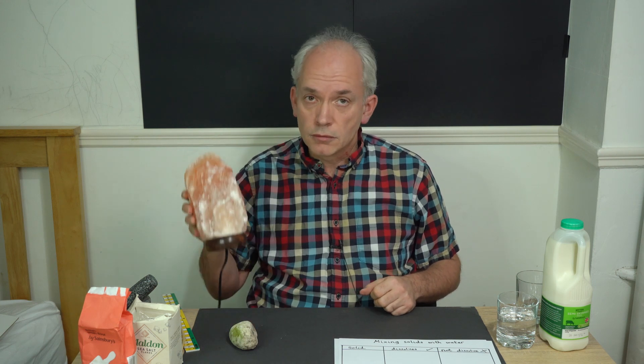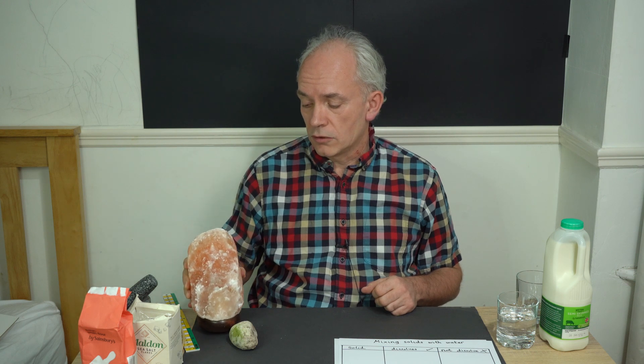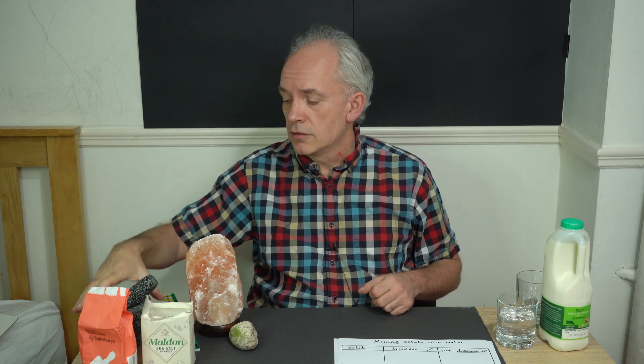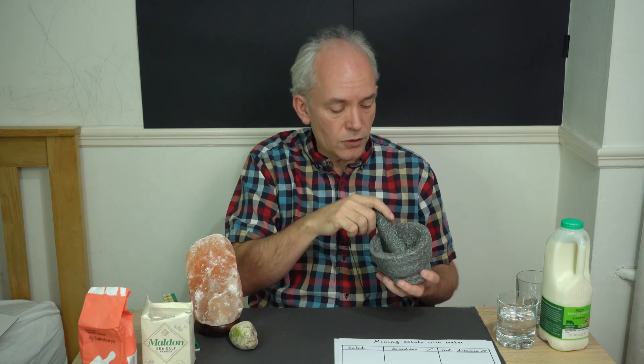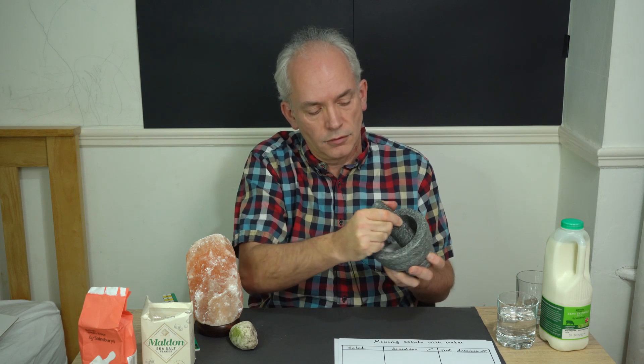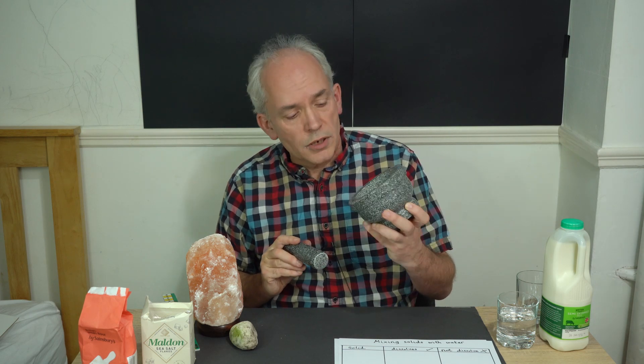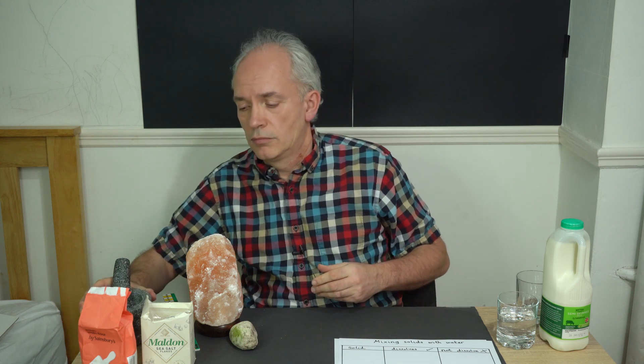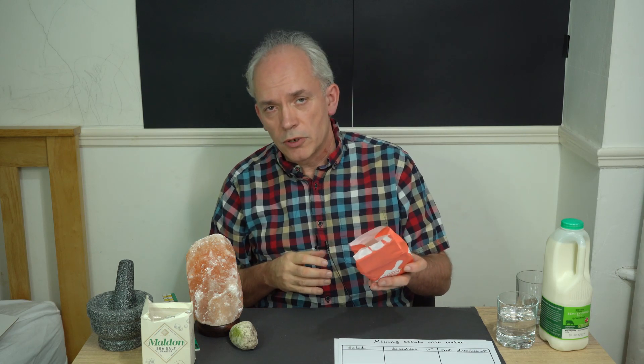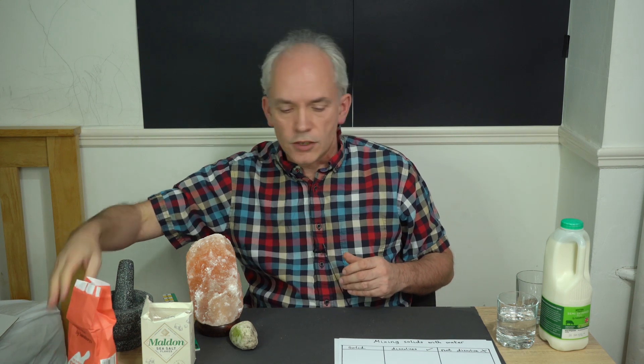Now this, do you know what this is? This is salt. This salt comes from the ground, they turned it into a lamp. And you can get salt like this and you can change the shape of salt by crushing it. And it's still a solid but it's more like a powder now. And we've got some flour here and flour is a powder, it's still a solid but it's been crushed into a powder.